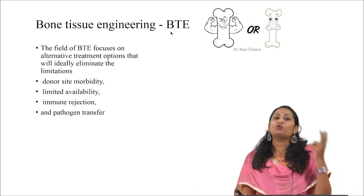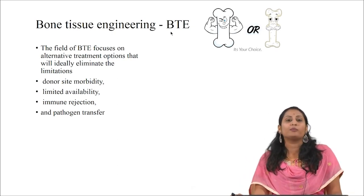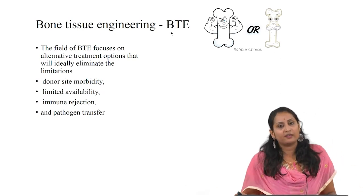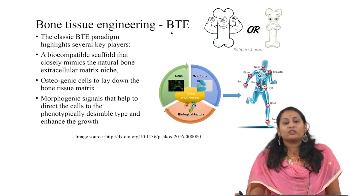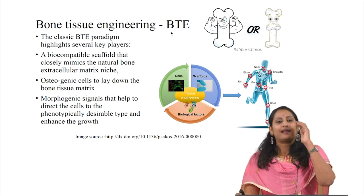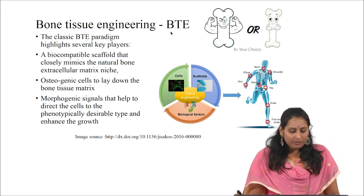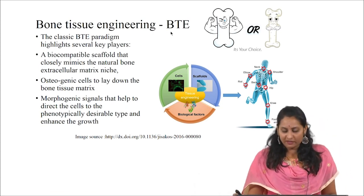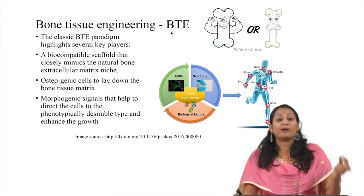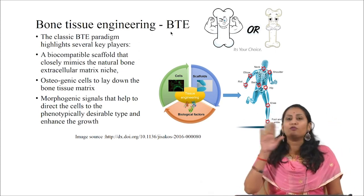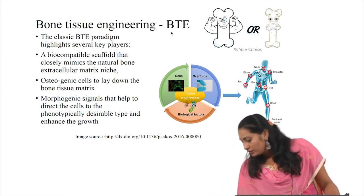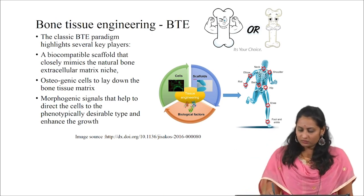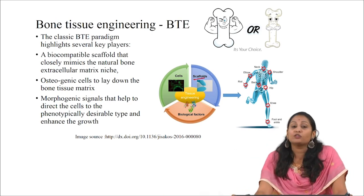Over 2 million surgical procedures are performed every year for bone grafting, where bone is considered to be the second most transplanted tissue after blood. This diagram explains the classic bone tissue engineering paradigm which highlights several key players. The key players are the three major components of the tissue engineering triad: the cells, the biocompatible scaffold that closely mimics the extracellular matrix — scaffolds are the 3D structure which mimics the extracellular matrix.